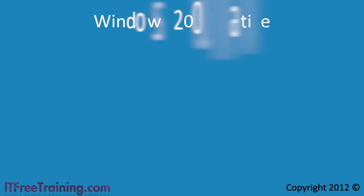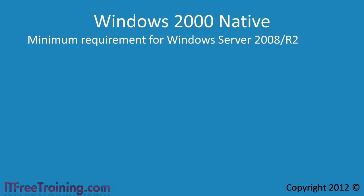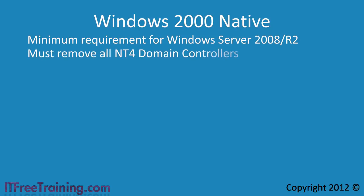The first domain functional level is Windows 2000 Native, which is the lowest domain functional level that Windows Server 2008 R2 supports. In order to raise your domain functional level to Windows 2000 Native, you must remove all domain controllers running Windows NT 4. If you select Windows 2000 Native, you basically get Active Directory. There are no special features at this level worth mentioning.